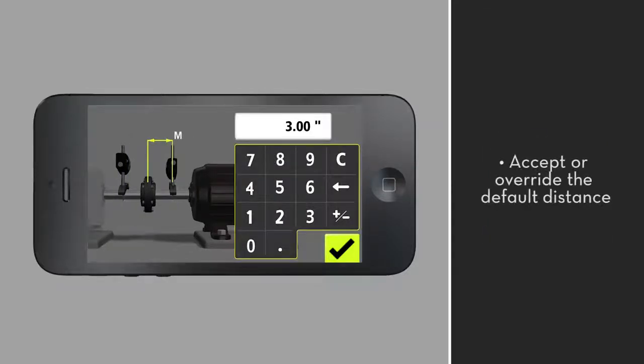By default, the app gives you half the distance between the coupling center and the movable laser head, accept or override.